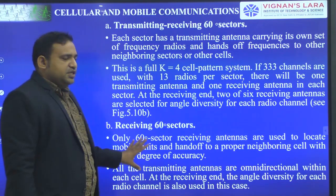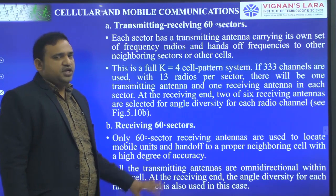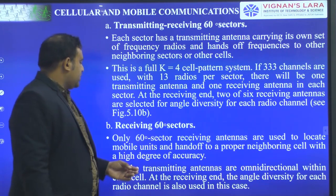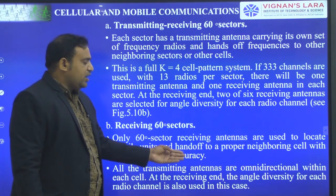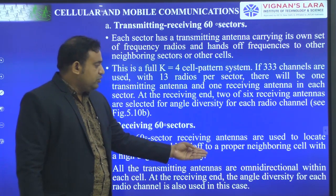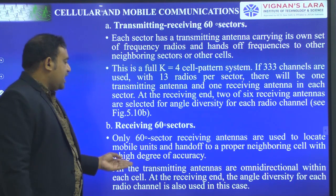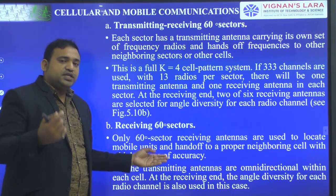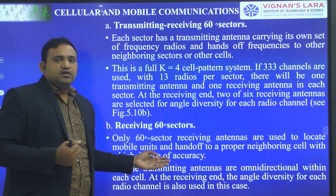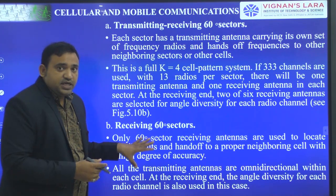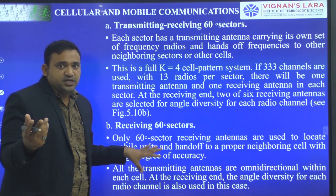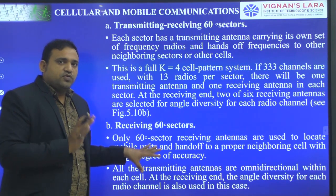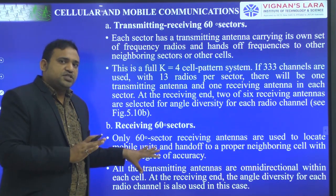The second approach is about receiving 60-degree sectors — only receiving antenna. Only 60-degree sector receiving antennas are used to locate mobile units and hand off to the proper neighboring cell with a high degree of accuracy. In this case, the transmitting antennas may be omnidirectional.